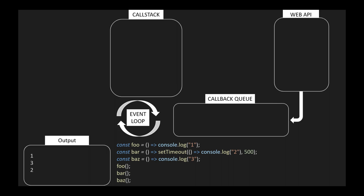Third, the callback queue — it's a queue that stores all the callback functions that are ready to be executed. Fourth, the event loop — it's a mechanism that checks the call stack and callback queue, and moves the callback functions from the callback queue to the call stack when the call stack is empty.